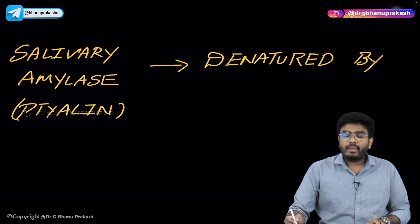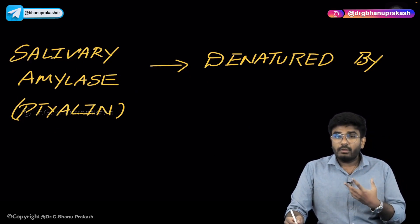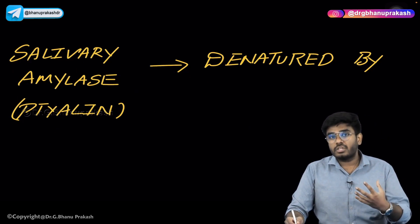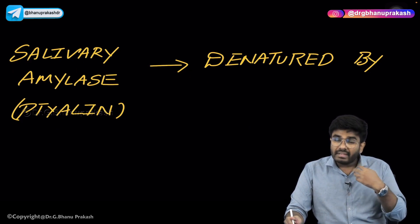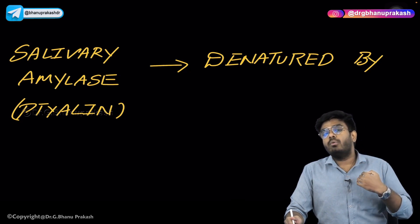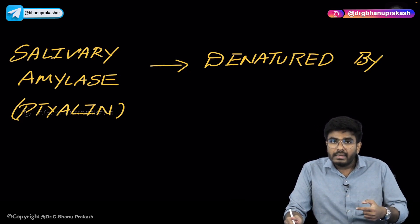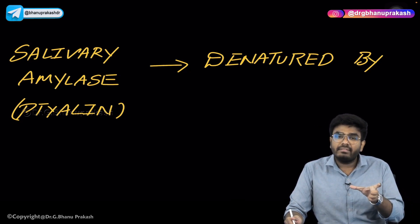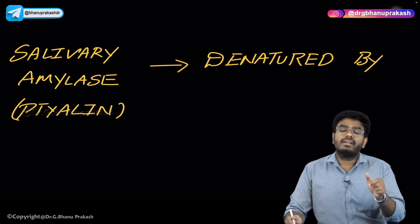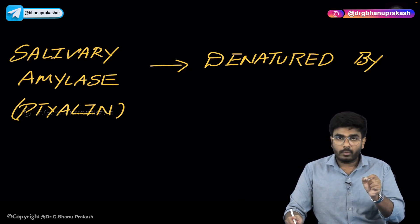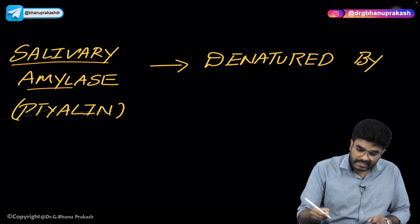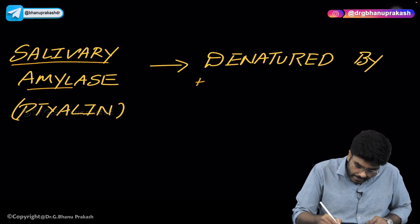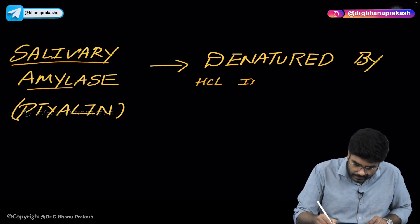The salivary amylase produced in the mouth helps in digestion of a small amount of carbohydrates. When salivary amylase goes down to the stomach, it is inactivated by the acid present there. This is an important exam question — salivary amylase is denatured by acid in the stomach.